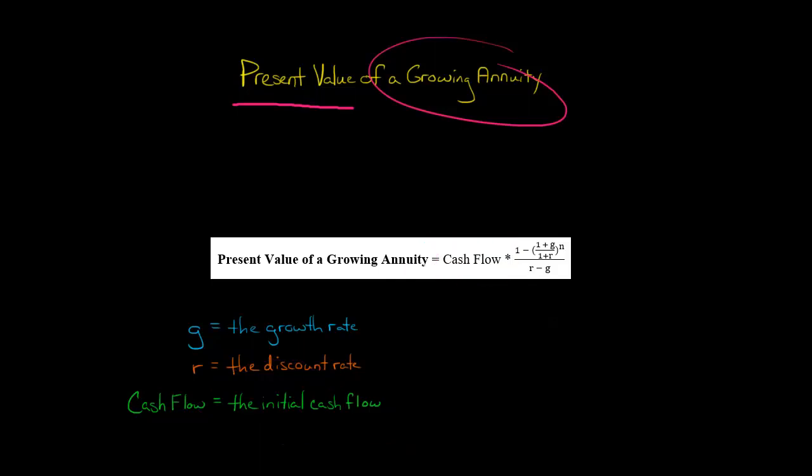Times 1 minus 1 plus G, which is the growth rate, that's the amount by which the annuity, the cash payment, is going to grow each period, divided by 1 plus R, where R is the discount rate, to the nth power.